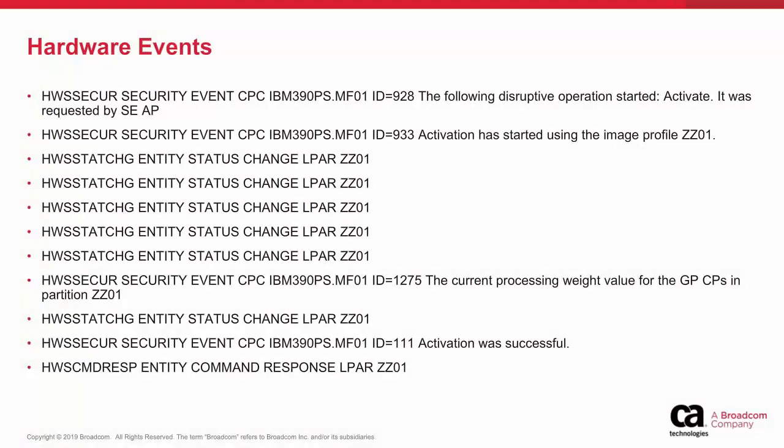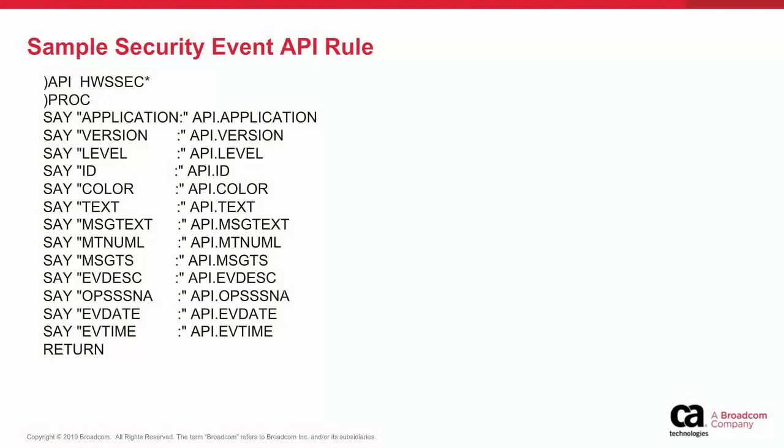This slide is a sampling of hardware events sent from the Ops BCPII server to Ops MVS. API rules can be written to take action on hardware events. As previously discussed, the bypass enable events option must be set to OFF to enable hardware events. This slide shows a sample rule written to process hardware security events. An API stem variable is generated to pass information to the rules by the Ops BCPII server event exit.